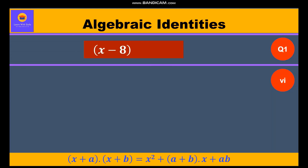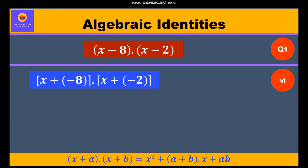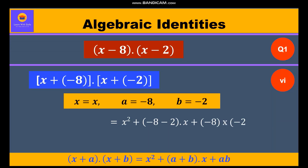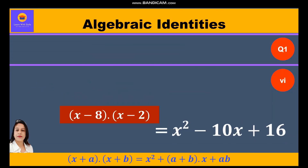Now the sixth part: (x - 8) into (x - 2). Taking the minus sign inside gives x + (-8) into x + (-2). Here x is equal to x, a is equal to -8, b is equal to -2. Substituting into Identity 5: x² + (-8 + (-2))x + (-8 × -2), which equals x² - 10x + 16. So this is our answer.